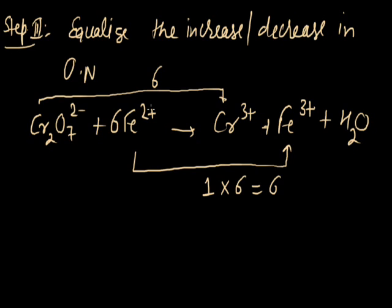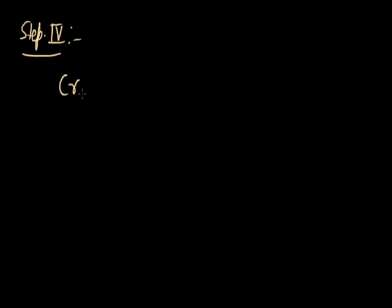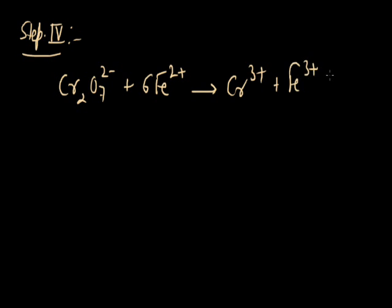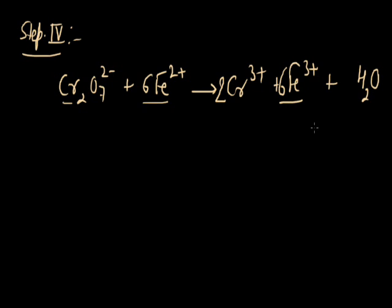Step 4: Balance the atoms other than oxygen and hydrogen. The equation is: Cr₂O₇²⁻ plus 6Fe²⁺ converts into Cr³⁺ plus Fe³⁺ plus H₂O. There are 2 chromium atoms on the left, so we write 2 before Cr³⁺. There are 6 iron atoms on the left, so we write 6 before Fe³⁺. Chromium and iron are now balanced.